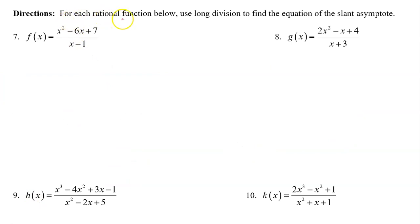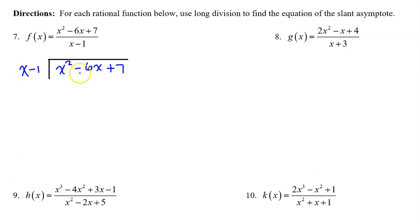For each rational function below, use long division to find the equation of the slant asymptote. Notice that in each case, the degree of the numerator beats the degree of the denominator by exactly one. Set up your long division, then begin by dividing the leading term of the numerator by the leading term of the denominator. x squared divided by x is x — line that up.